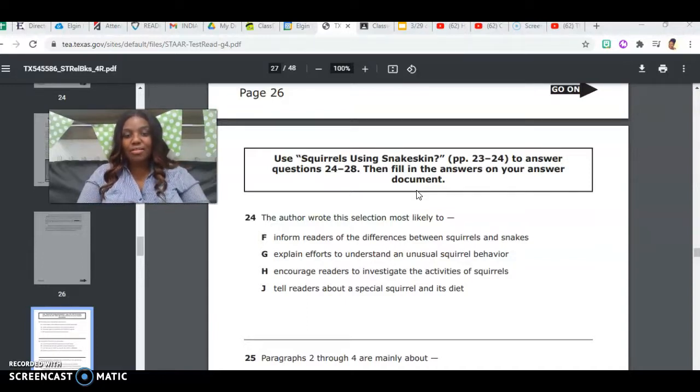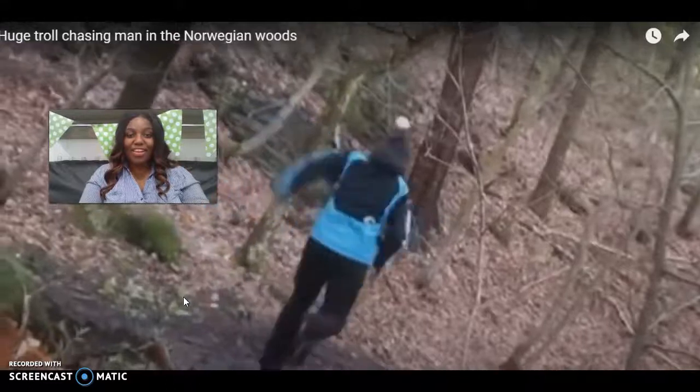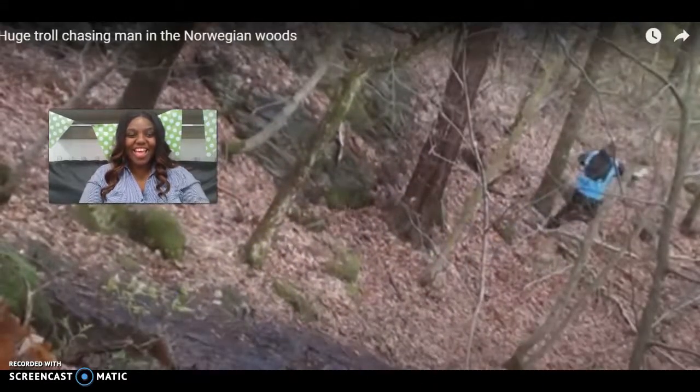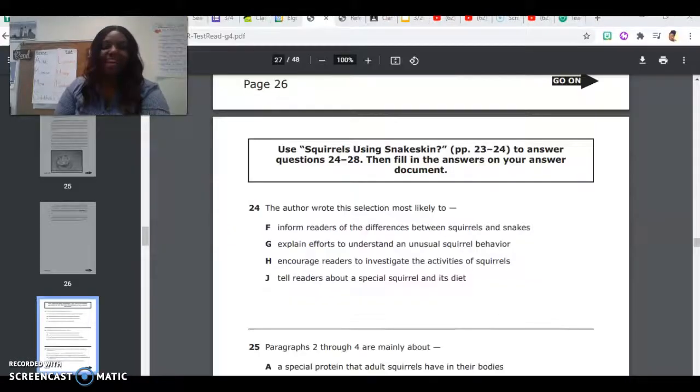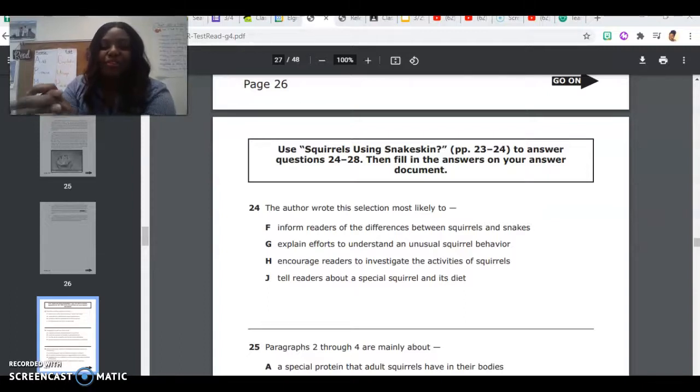Remember it's called a selection because it is non-fiction. F, inform readers of the differences between squirrels and snakes. If you are in the classroom, you can write your answer on a whiteboard and hold it up. If you're at home, you can just write it on a piece of paper or a whiteboard if you have one. So if you chose F, you better run for your life. G, explain efforts to understand an unusual squirrel behavior.